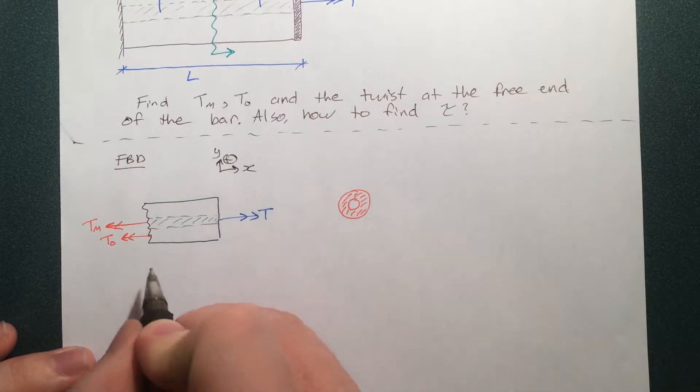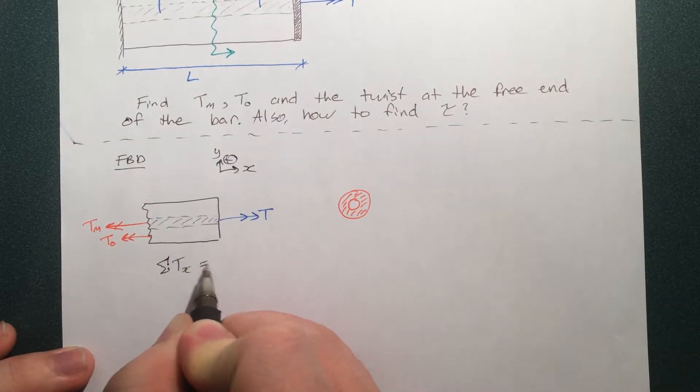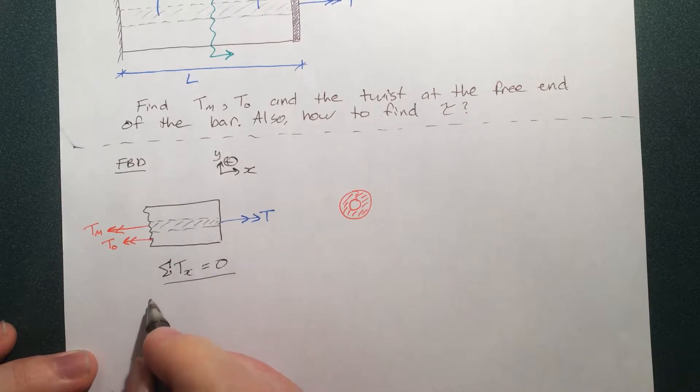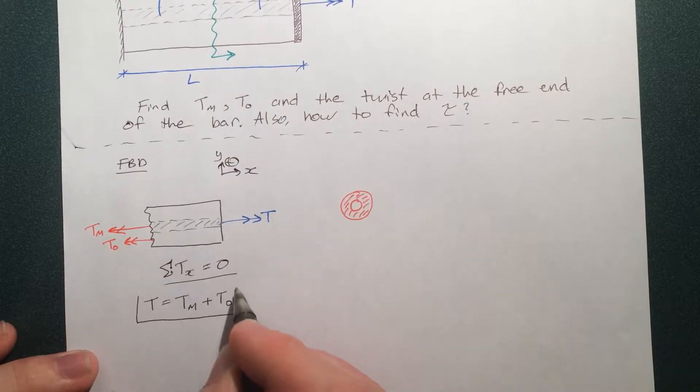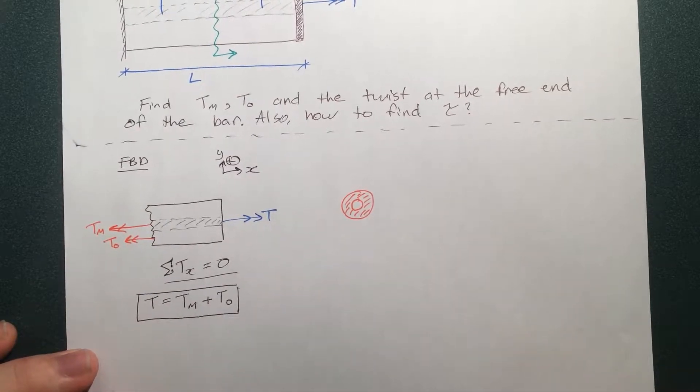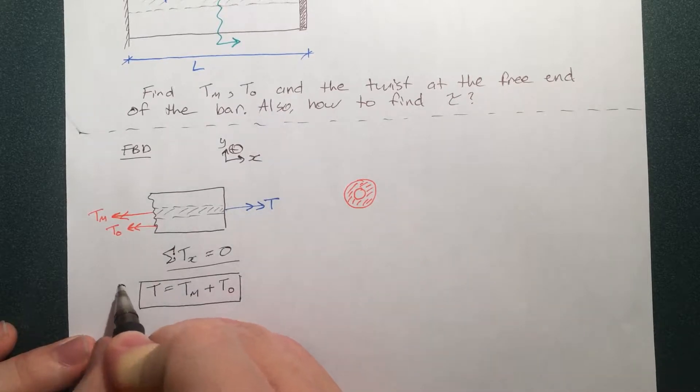And like always we can write T equals T_M plus T_O. So that's our first equation. Let's just label that with a one. And that's our equilibrium equation.